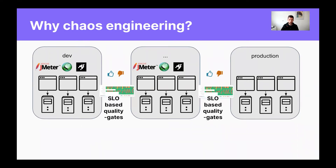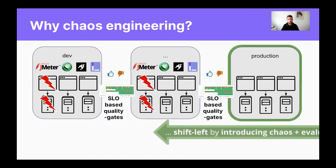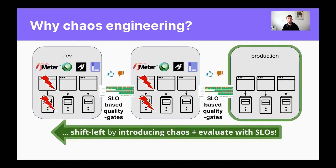But you can never really make sure that everything works in production — there are never any issues in production. We all know there might be some issues in production, and the idea of this presentation is to simulate these issues in stages earlier prior to production, simulate them and evaluate them based on SLOs. With this, you can improve the resilience of your applications before you move into production and keep production in a more safe place. The idea is to shift left by introducing chaos and evaluate the impact of the chaos with SLOs.